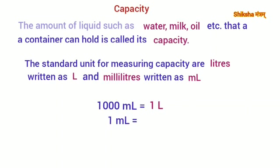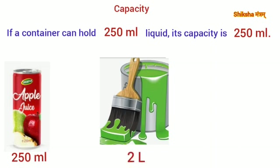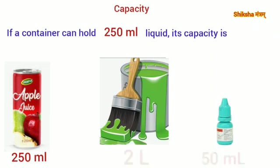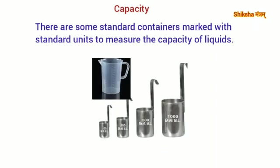1 milliliter is equal to 1/1000 liter. For example, if a container can hold 250 ml of liquid, its capacity is 250 ml. Similarly, a capacity can be expressed as 2 liters 50 ml. There are some standard containers marked with standard units to measure the capacity of liquids.